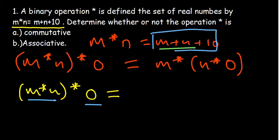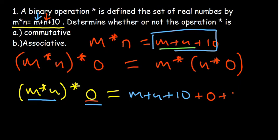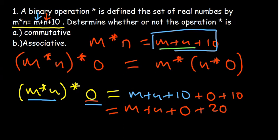Where there is m in the original equation, we substitute m plus n plus 10, and where there is n we put o. So we get: (m plus n plus 10) plus o plus 10. Collecting like terms gives us m plus n plus o plus 20. That's the left-hand side result.